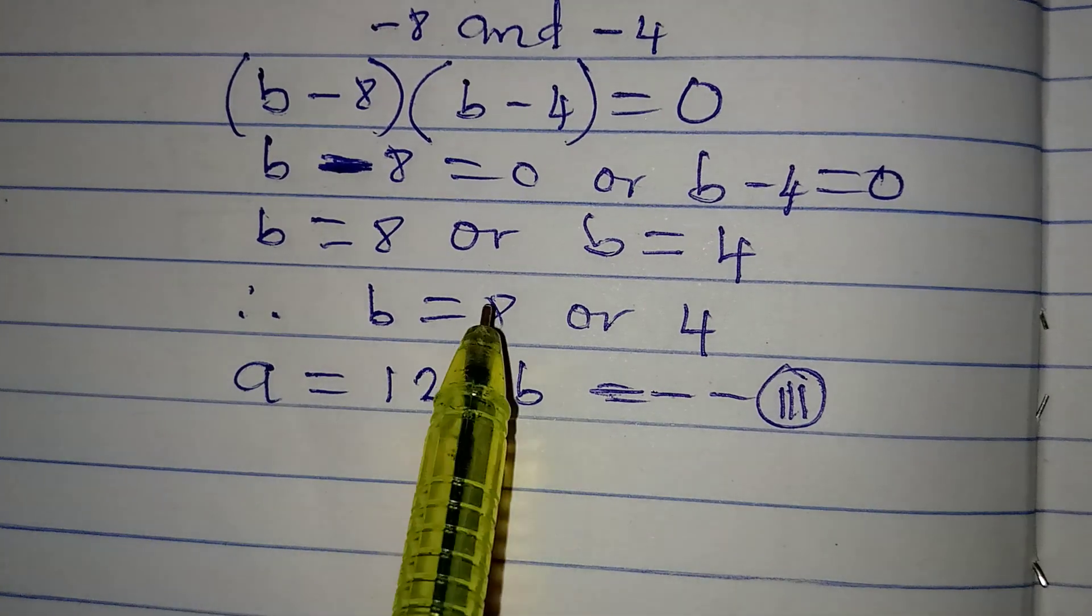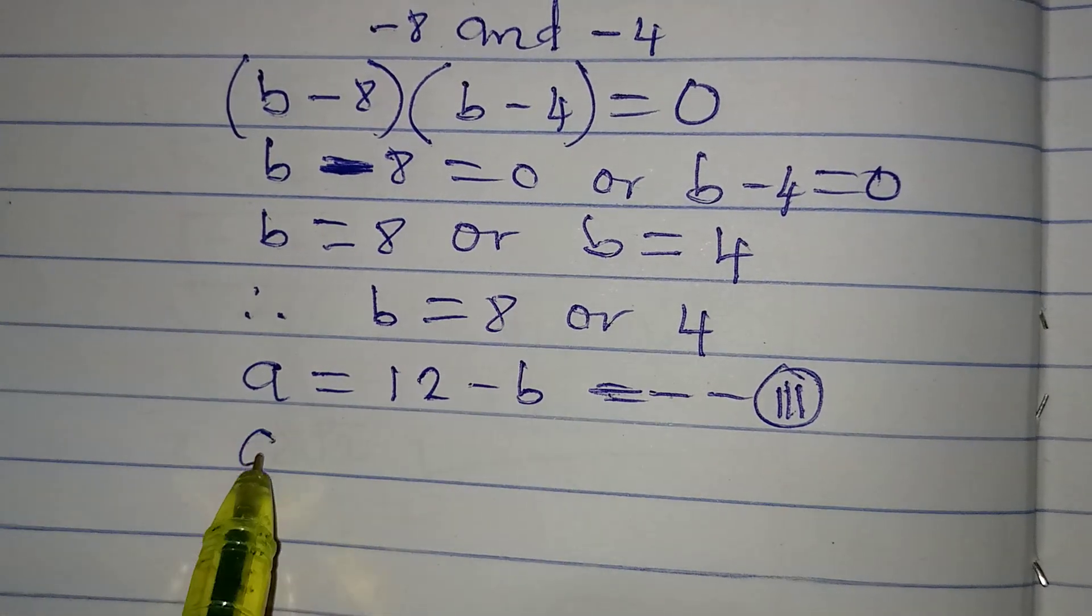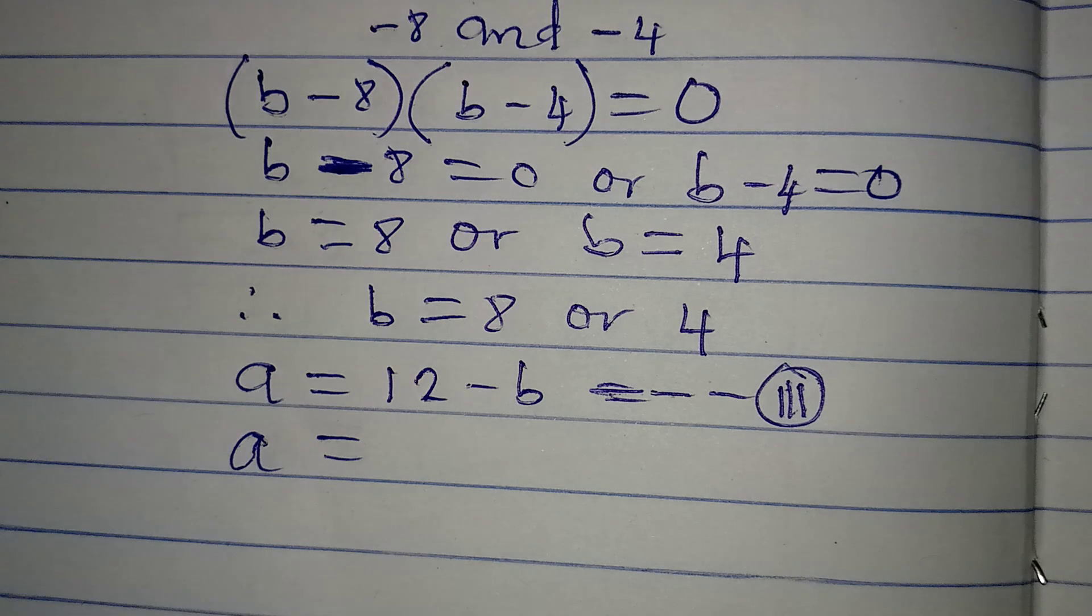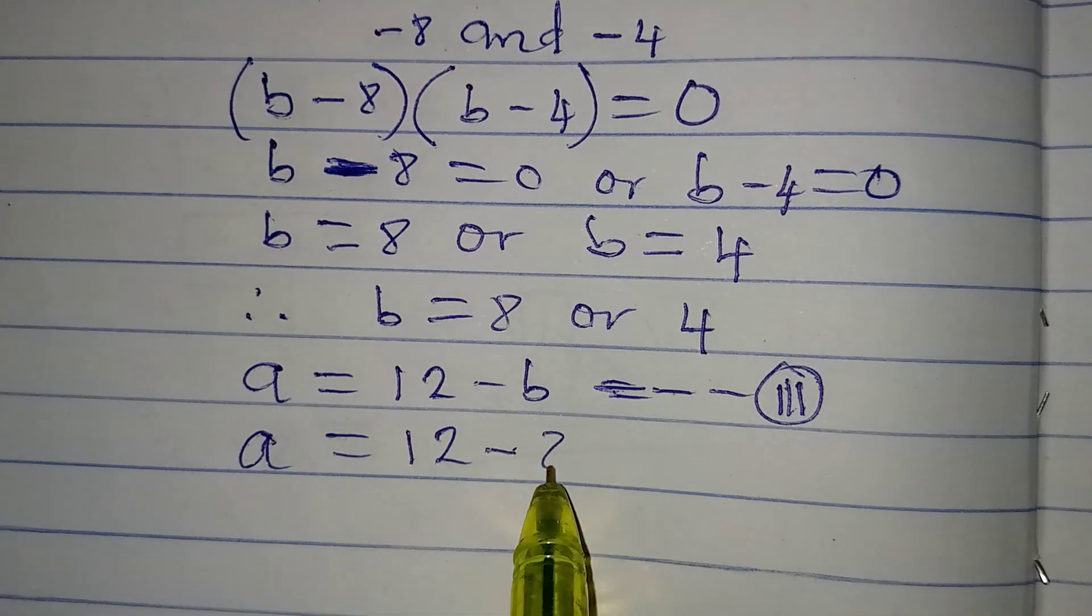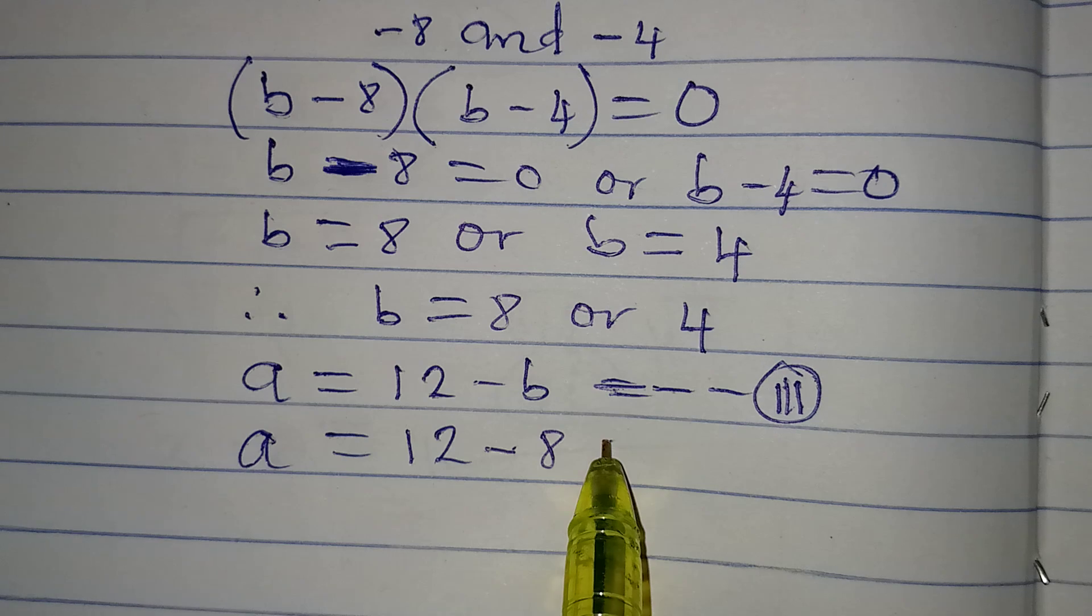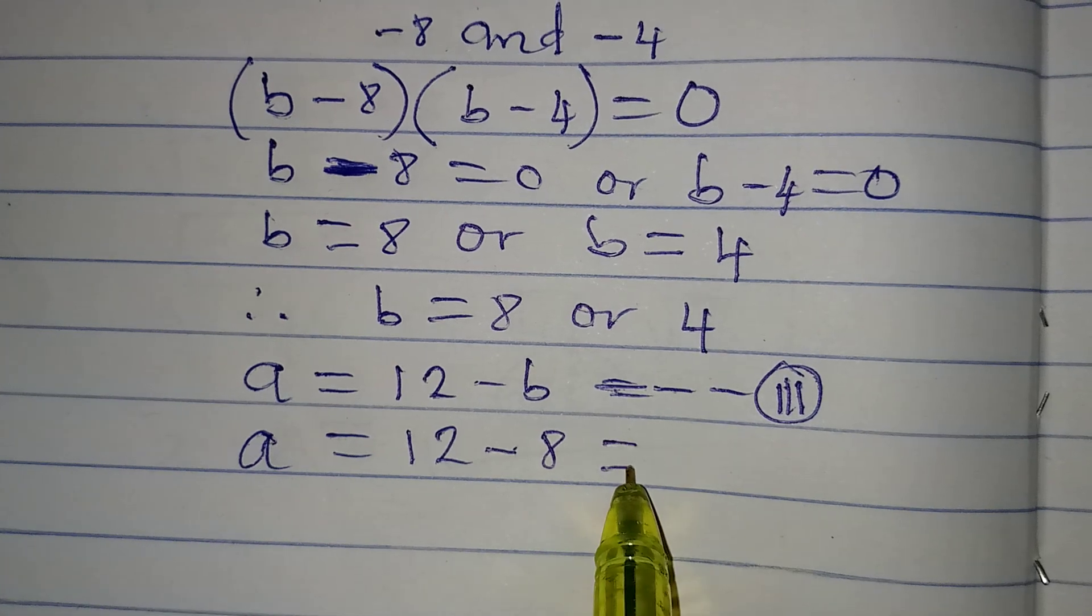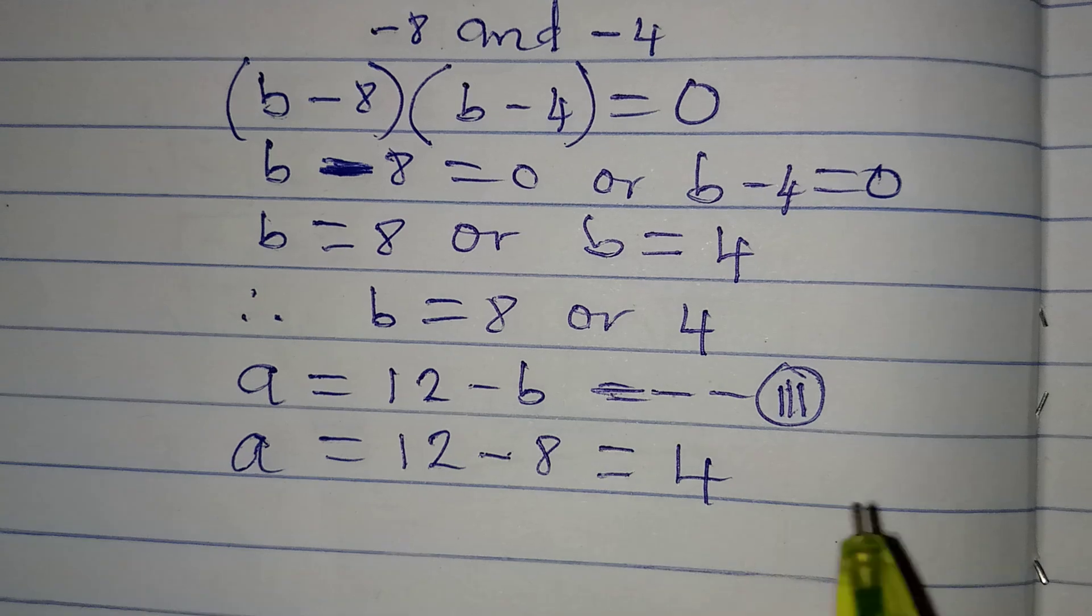Now that B is equal to 8, that means A will be equal to 12 minus 8. And it means that A is equal to 4.